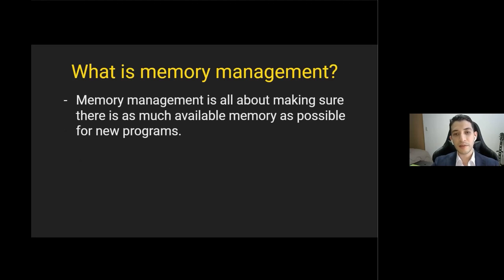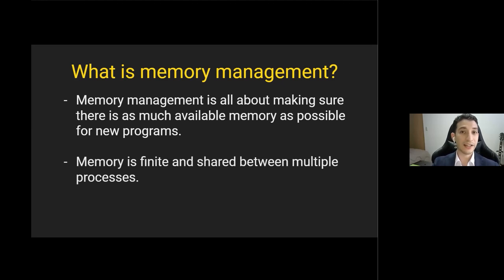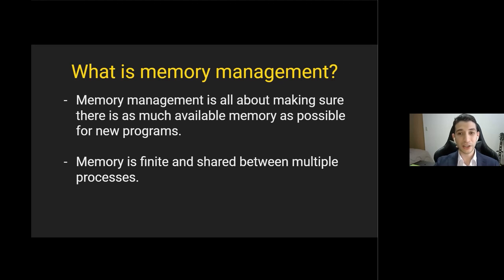Memory management is about making sure that any currently running program is only using the amount of RAM that it requires — no more than that — in order to leave as much memory available as possible for new programs. The reason for that is that memory is finite and it is shared between multiple processes. So since we are processes and memory is shared, we don't each get our own desk; we share one big desk that gets split into chunks and allocated depending on the task.